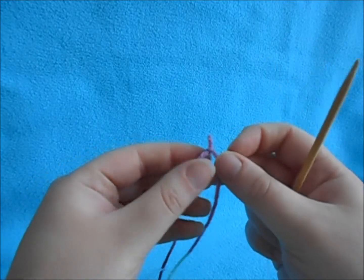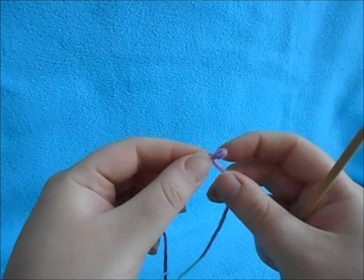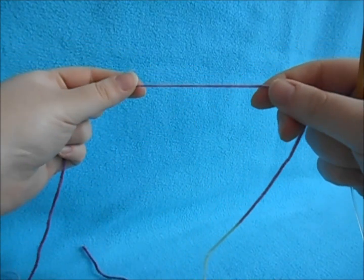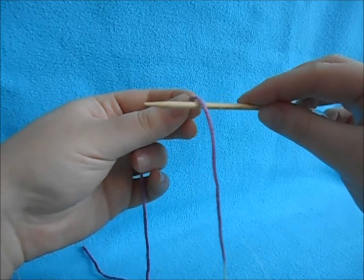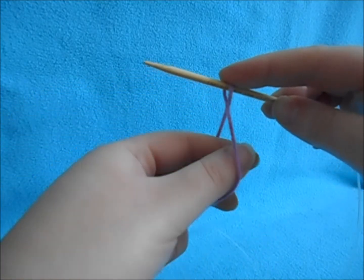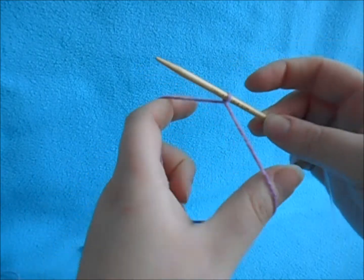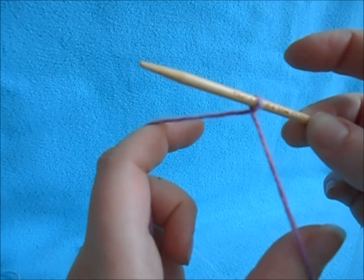I prefer not to have a slip knot. Sometimes this knot here can be noticeable in the end. So you take the tail end of your yarn and you put that in the back. Put your needle underneath. Bring the tail yarn to the front and the one connected to the ball in the back. And you cross them while making your loop on your needle.